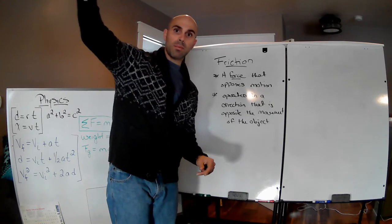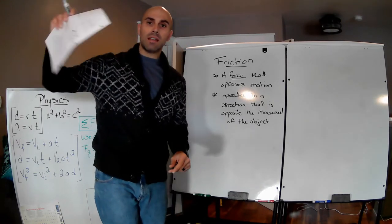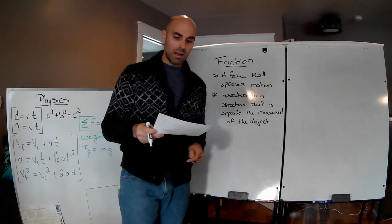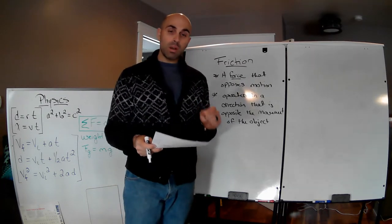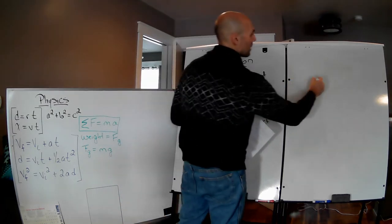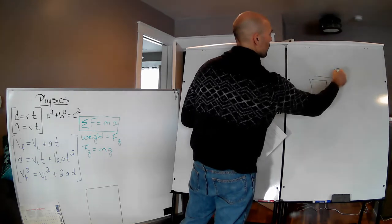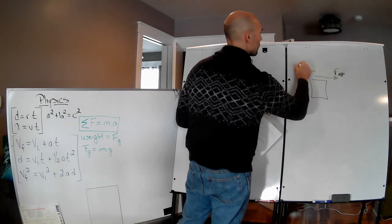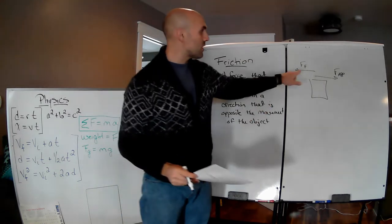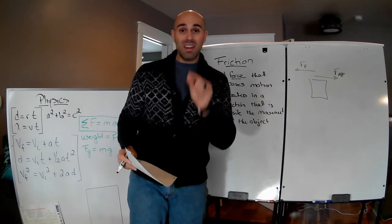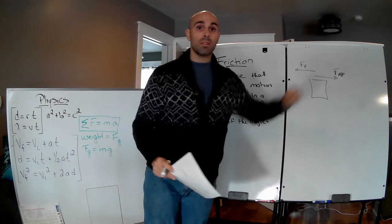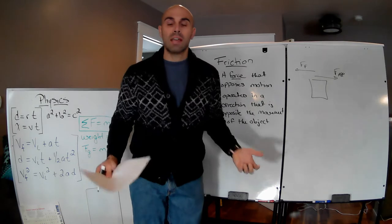Operates in a direction that is opposite the movement of the object. Now, an important note: if you have an object that is moving with a force applied and you have friction going backwards, it's important to realize that this frictional force can never, never, ever be greater than the applied force. It just cannot happen.